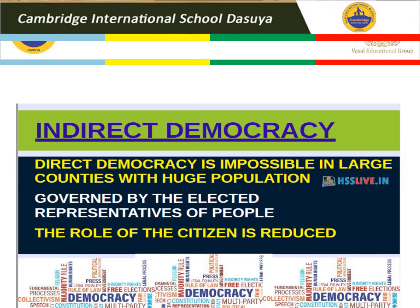Direct democracy is impossible in a large country with a huge population. In India, you alone cannot vote and directly choose the Prime Minister because India is a vast country. The government is run by elected representatives of the people. We choose our representatives who in turn go and choose further representatives — this is how our Prime Minister is chosen indirectly by us. The role of the citizen is reduced in this indirect democracy. Citizens choose their representatives who are actively involved in governing and administering the country. The method followed to choose the representative is referred to as an election.